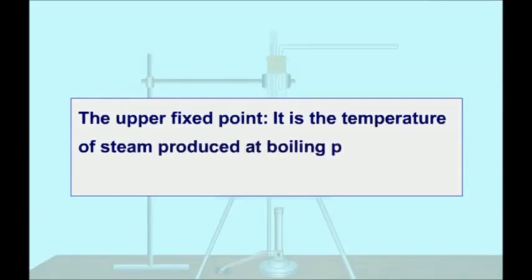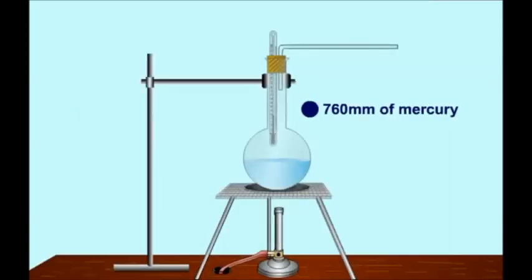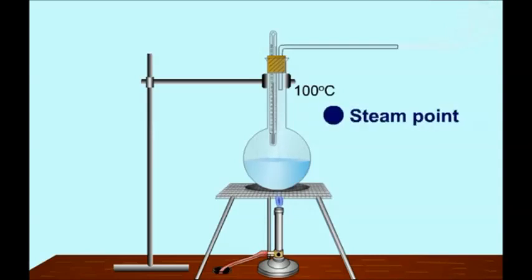The upper fixed point in a thermometer is the temperature of steam, and this steam is produced by boiling pure water under normal conditions of pressure. That is, the pressure is 76 centimeters of mercury.